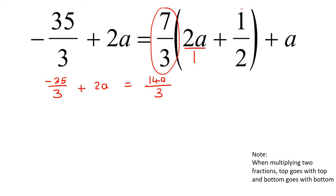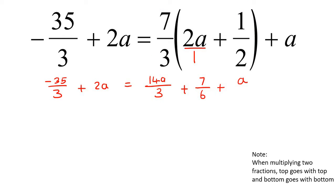Now we're going to multiply the 7 over 3 and the 1 over 2. Top goes with top, so 7 times 1 is 7, and then the bottom goes with the bottom, which is 6, and then we just have plus a. Now all of a sudden this has become a question just like what we had in the previous lesson, where there are fractions.